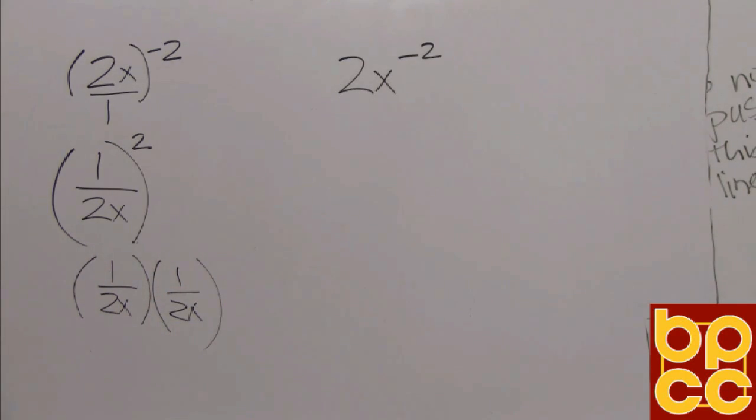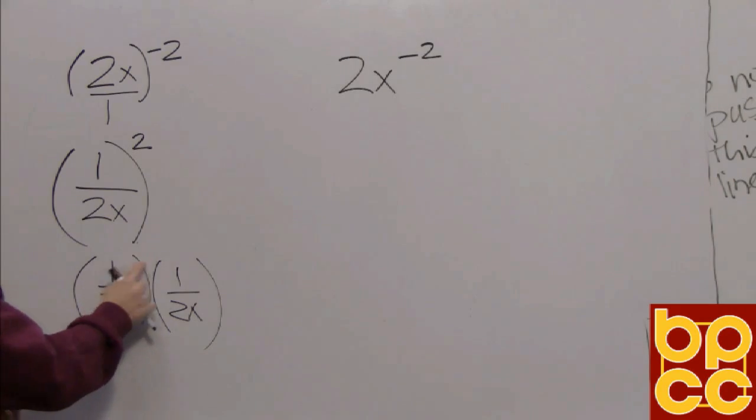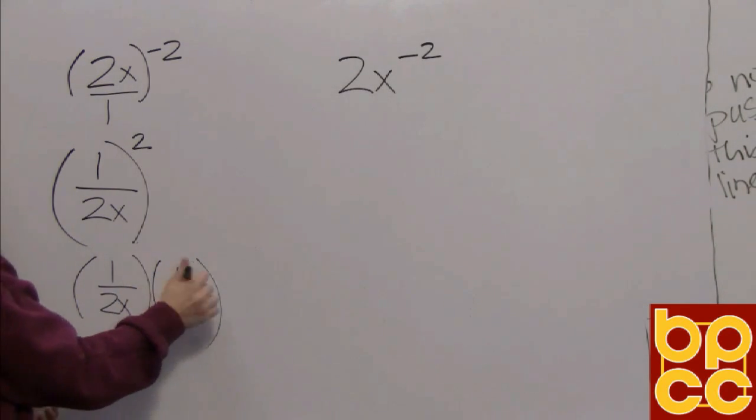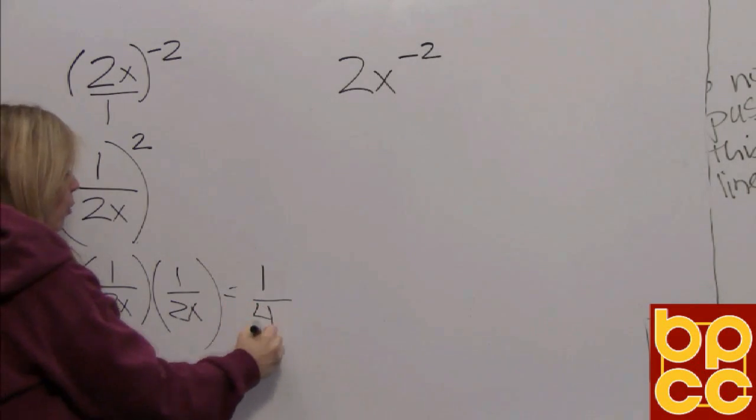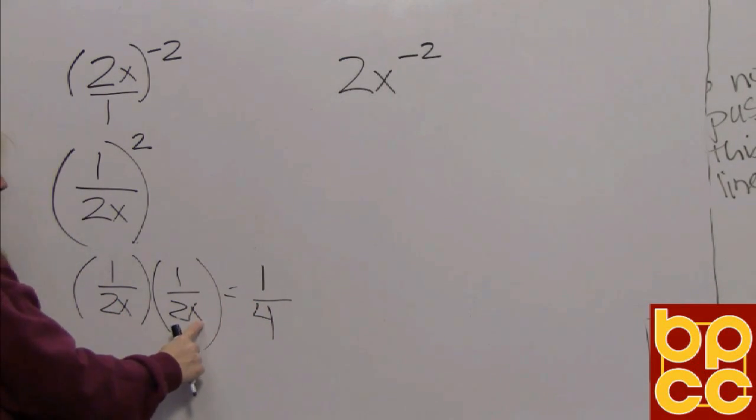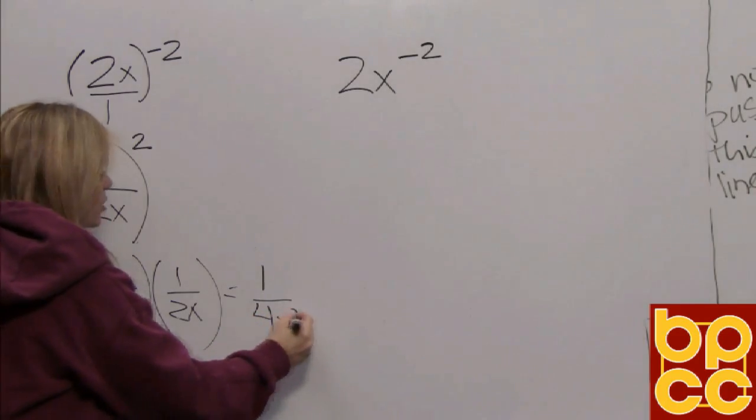And we all understand how to multiply fractions. We do top times top, bottom times bottom. So 1 times 1 is 1. The coefficients 2 times 2 are 4. And x times x is always x squared.